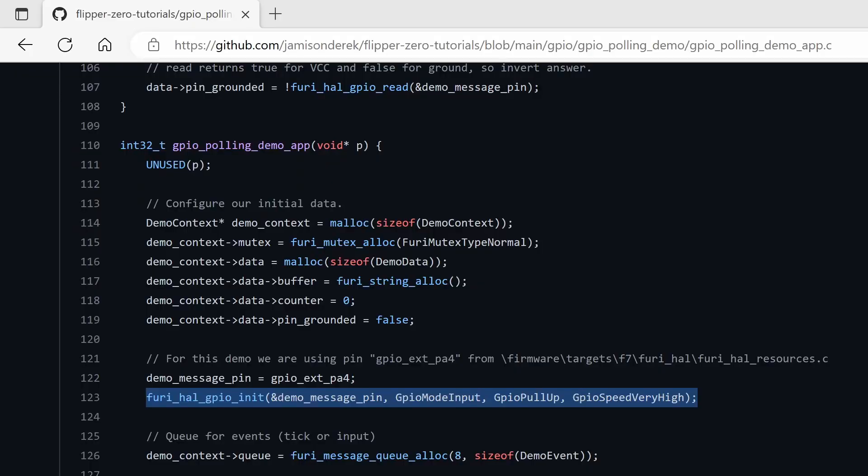And then finally, if you're doing your own code, you can on your GPIO init, when you pass in the pin and then the mode input, say GPIO pull-up instead of pull-down or pull-none. So that'll determine if you want to pull-up, pull-down, or no pull-up resistors, and then your speed.